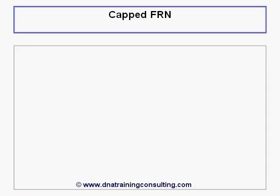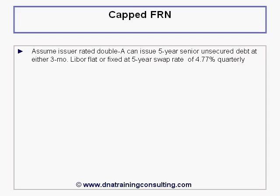We begin with probably the simplest structure in this module, namely the capped FRN. Throughout this module we will take the case of a highly rated issuer, typically AA or AA+, and assume that this issuer can issue 5-year senior unsecured debt at either 3-month LIBOR flat on a floating rate basis, or at the 5-year swap rate on a fixed rate basis, which is revealed on the worksheet pricing grid to be 4.77% on a quarterly pay basis.